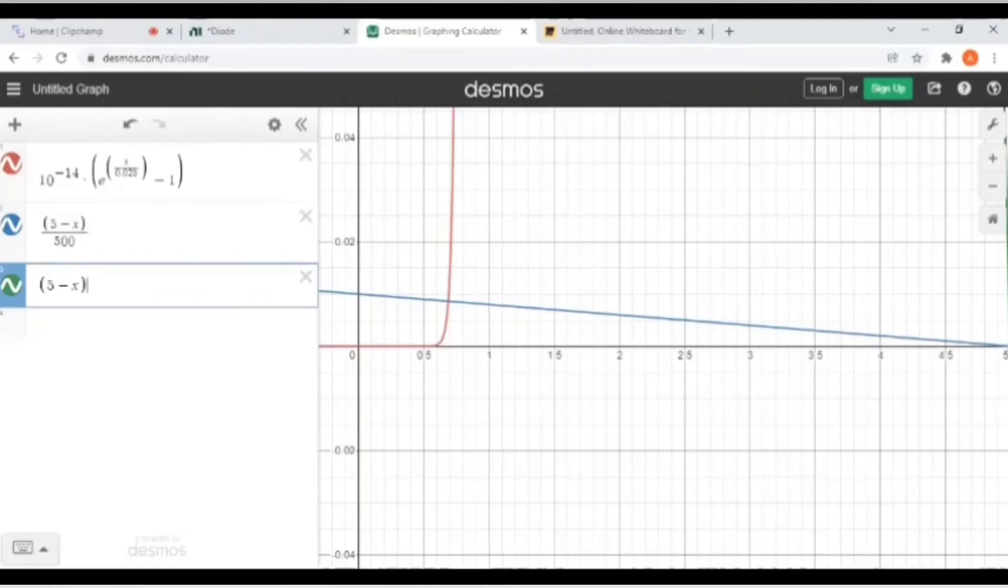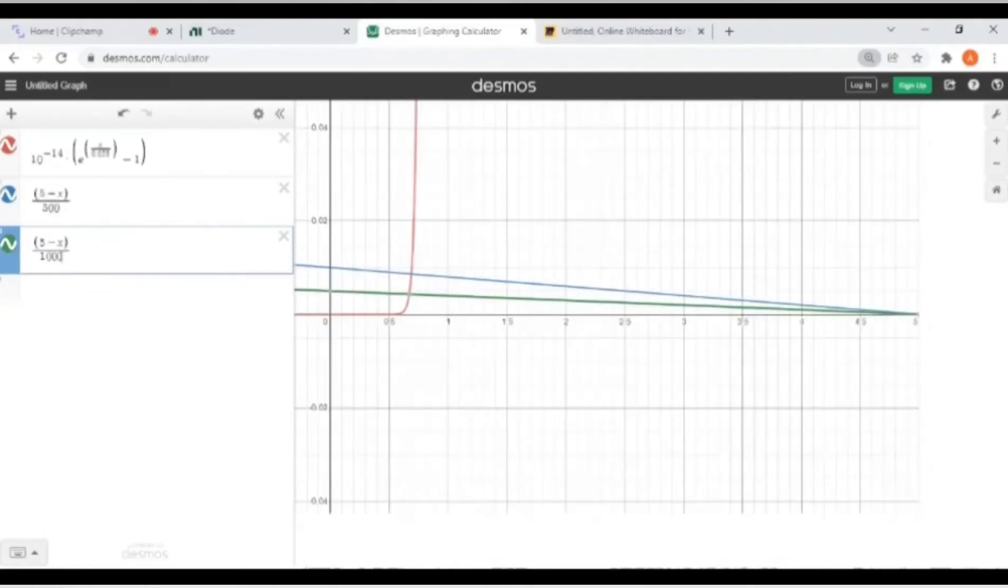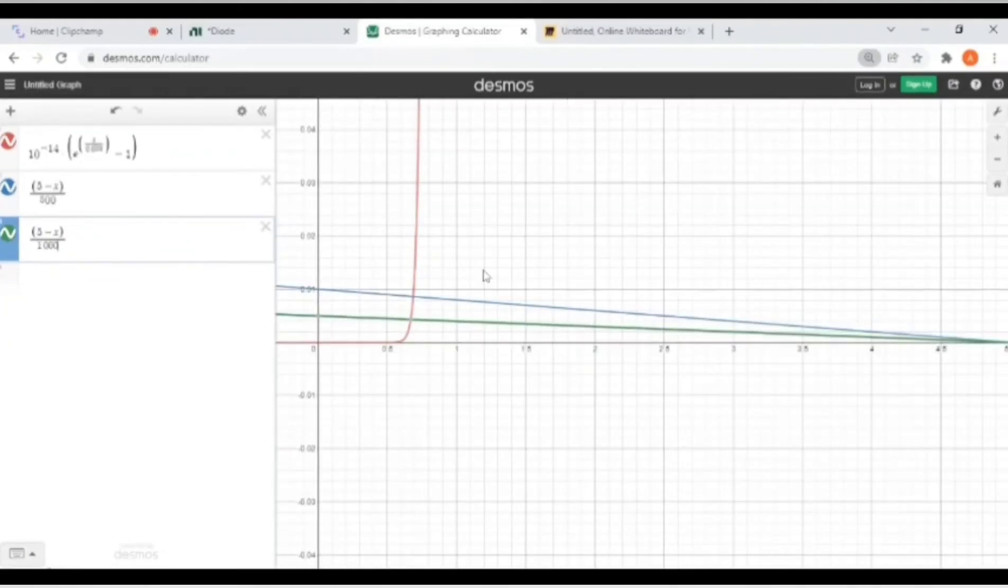Now let's write another equation. Here the slope is 1000, minus 1 upon 1000. The blue line is with the slope of minus 1 upon 1000 and the green line is with the slope of minus 1 upon 500. You can see the difference of the slopes.